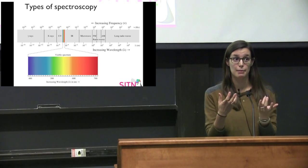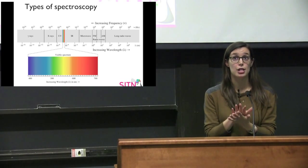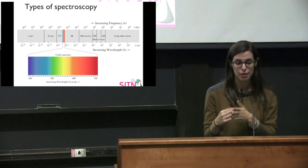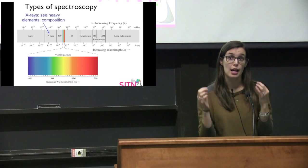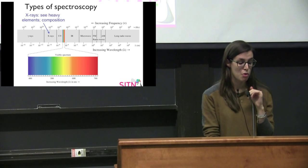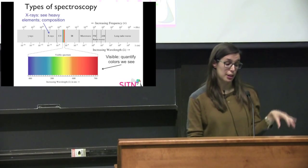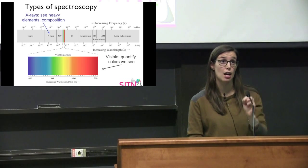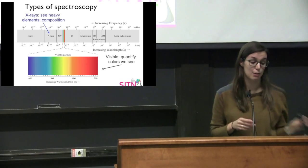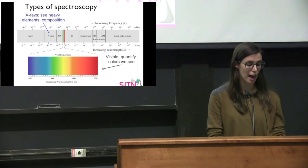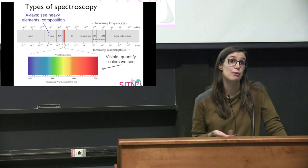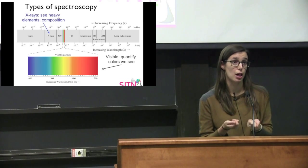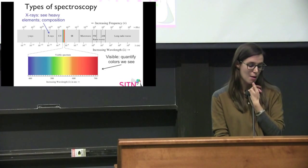We know that X-rays are good at seeing heavy elements, and it turns out you can be more quantitative than just an X-ray image by doing spectroscopy. I actually use a type of spectroscopy called X-ray photoelectron spectroscopy, where I can identify the elemental composition of the material I'm studying. There's also visible spectroscopy where you can quantify what color something is based on the different energies, which correspond to different colors of light. And then there's infrared spectroscopy, which is used a lot in chemistry — what infrared spectroscopy allows you to do is look at molecular bonds.